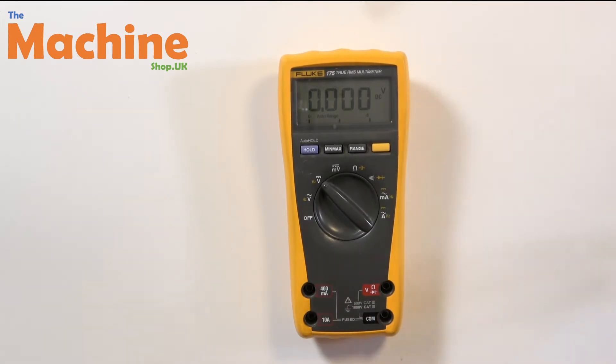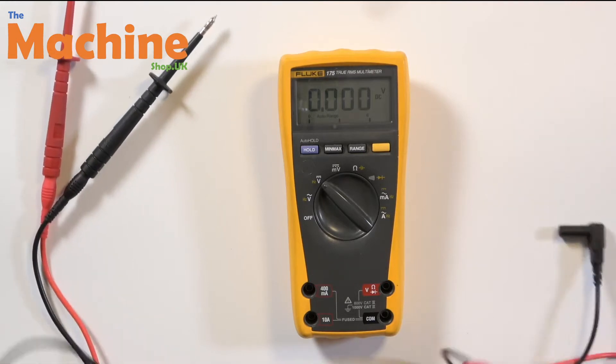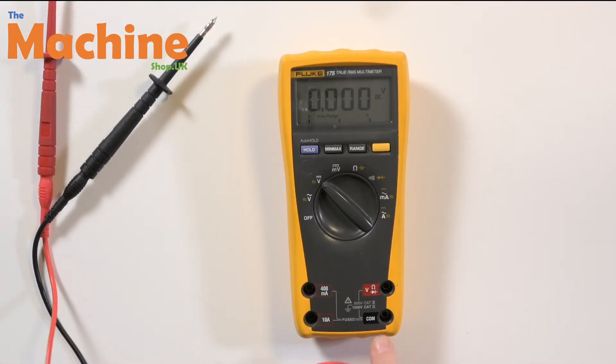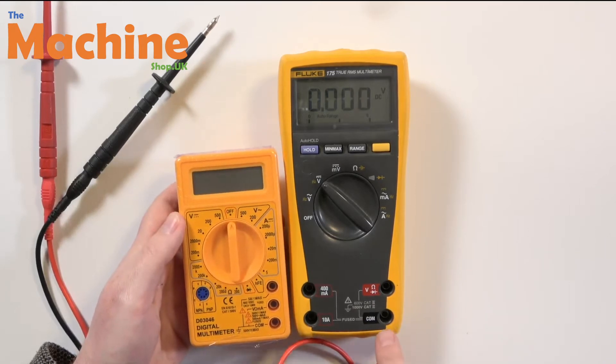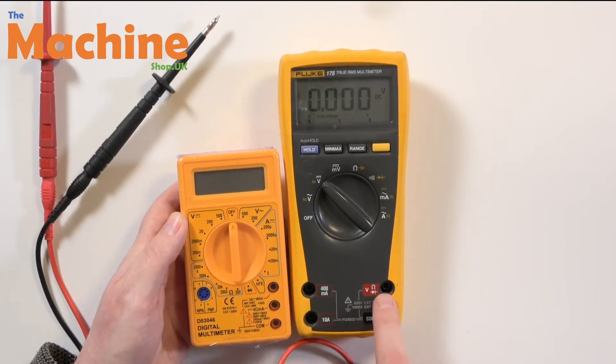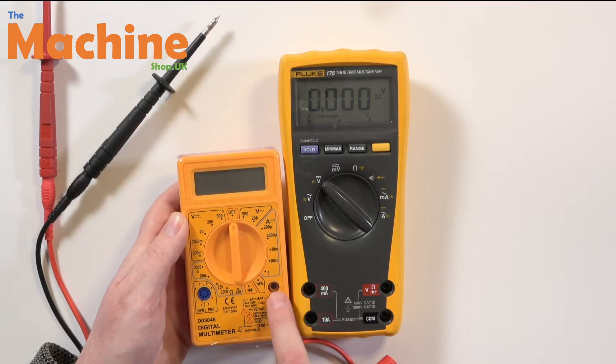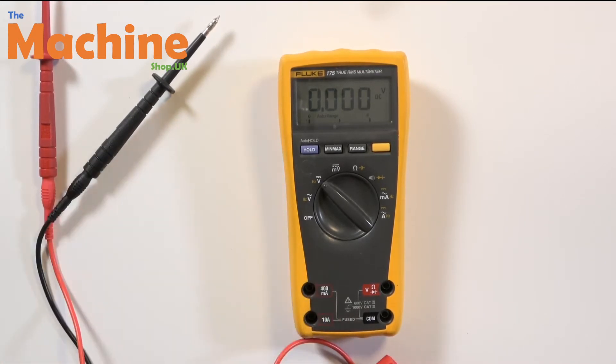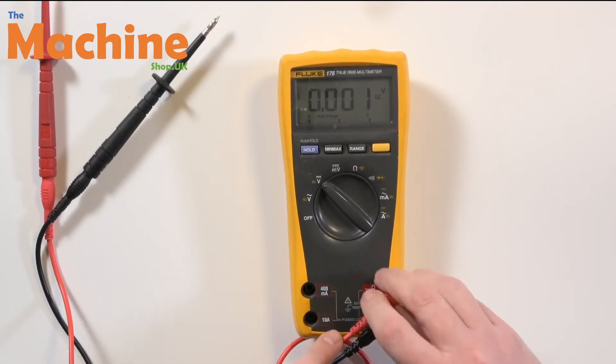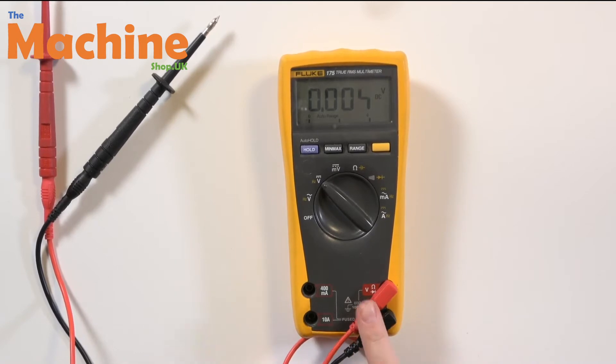Now DMMs will need some leads so I've got some just generic leads here that you'd use for any sort of DMM. You can see they've got several connectors on the bottom, quite common as well. They normally have a common, a voltage, and a current. So this one is this top one, this current one here. This one's actually got two for measuring different currents. So here I'm going to plug in my black into my common and I'm going to plug my red into my voltage one there.